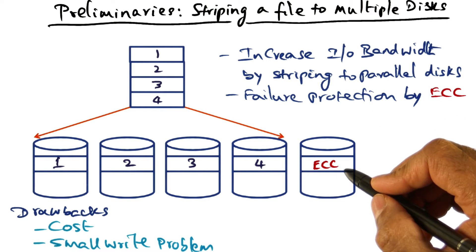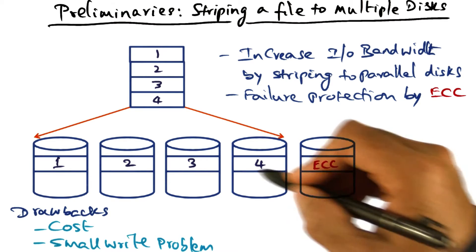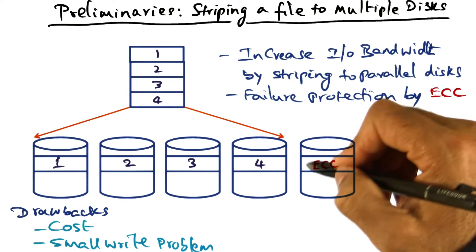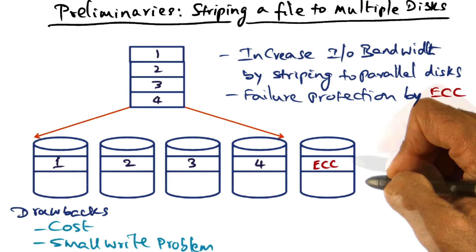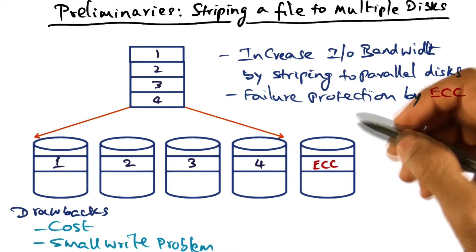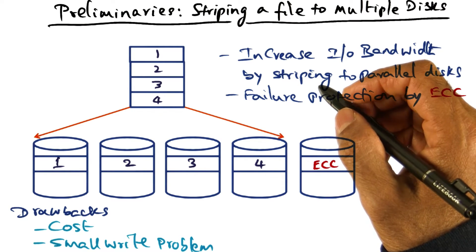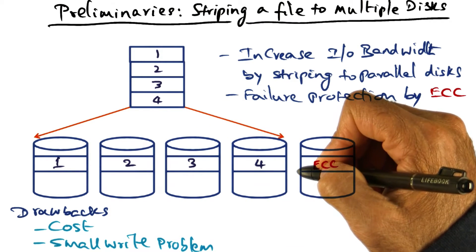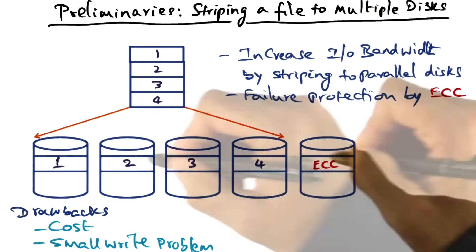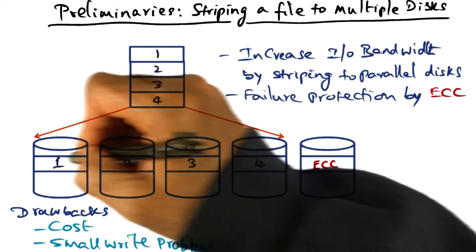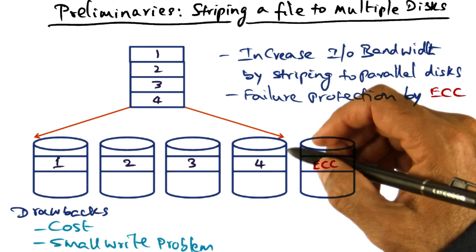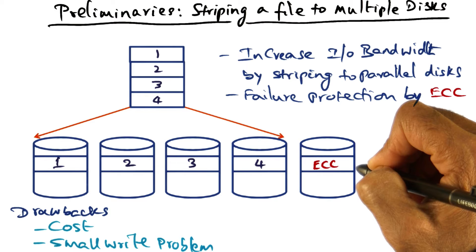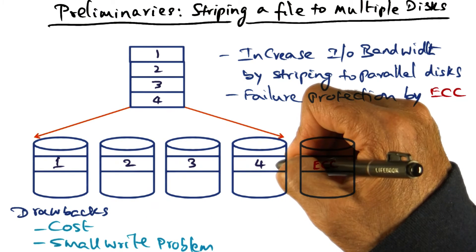This is what is called error correcting code. An error correcting code allows errors to be detected when I read things from the disk, and if something is wrong, I can correct it using this extra information written on the fifth disk. So that's the big picture of how striping a file to multiple disks works. We take a file and stripe it over four disks, and we also write an error correcting code for the striped data, so that if an error manifests itself with any one of these disks, it can be corrected using this error correcting data.